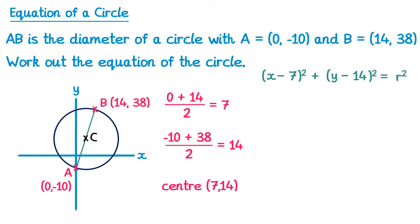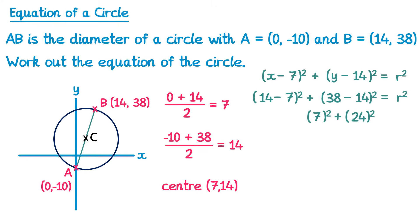We now just need to find the radius. We'll pick a point on the circle and substitute those coordinates in. Using point B at (14, 38): (14 minus 7) all squared plus (38 minus 14) all squared equals r squared. Fourteen minus seven is seven, so 7 squared; 38 minus 14 is 24, so 24 squared equals r squared. Seven squared is 49 and 24 squared is 576.